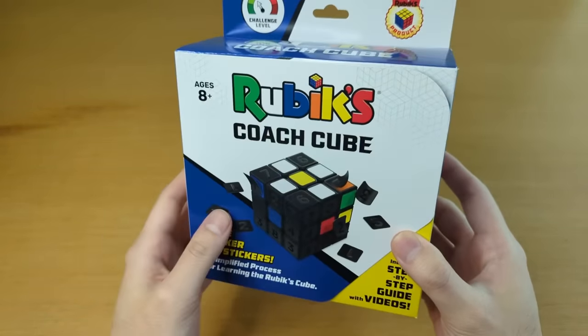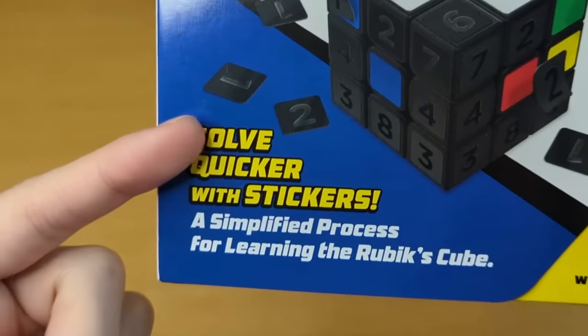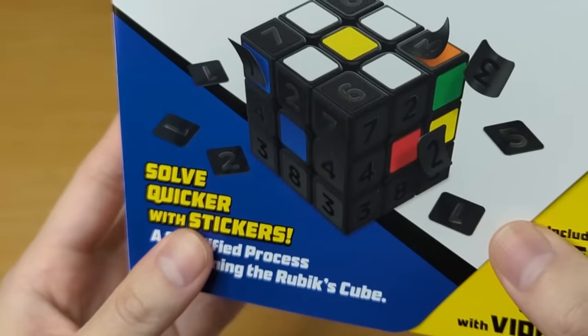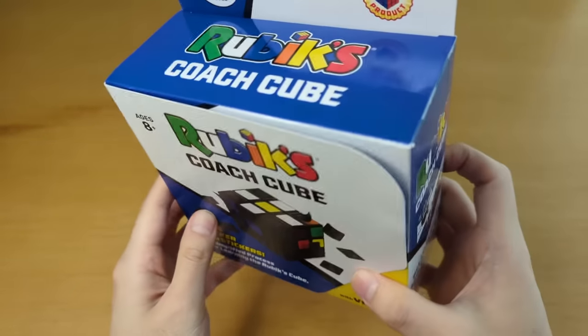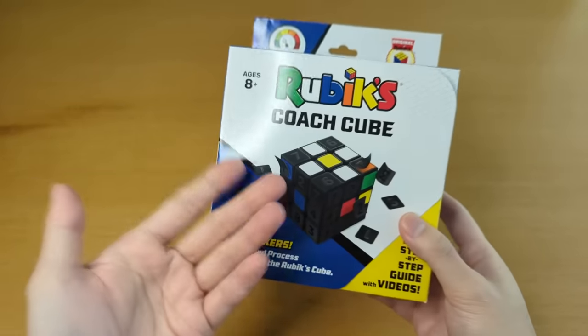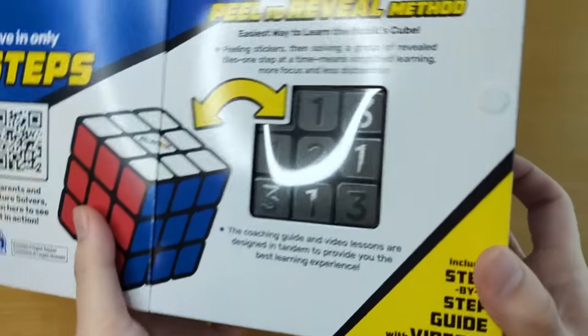When I saw this, I was like yeah, Rubik's Coach Cube. What? What is this? You peel the stickers? We're solving quicker with sticker peeling now? And get this - peel to reveal? You guys think you're clever? I've been gone for like a couple months and suddenly this is what we have? Well, I still paid for it with my own money, so who's laughing now?